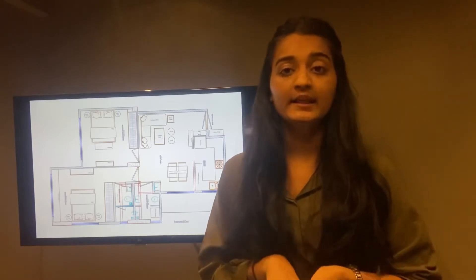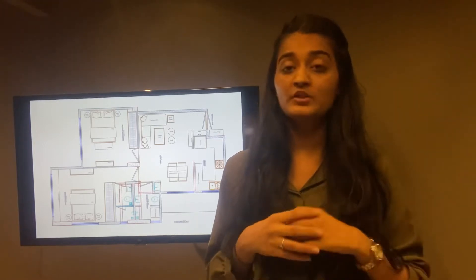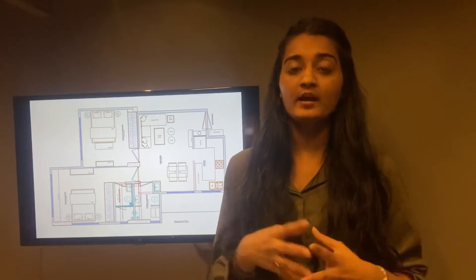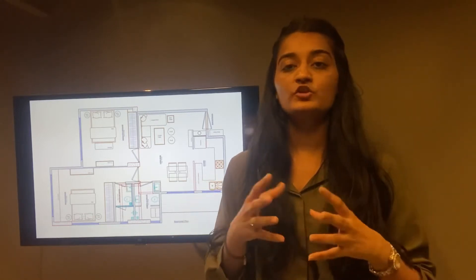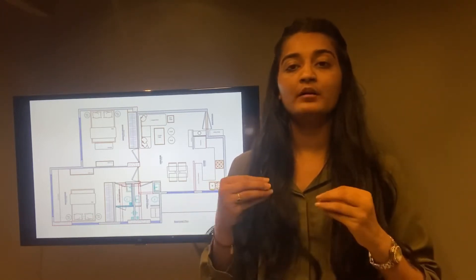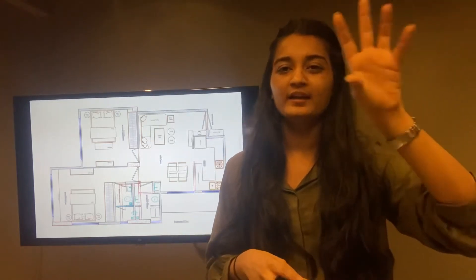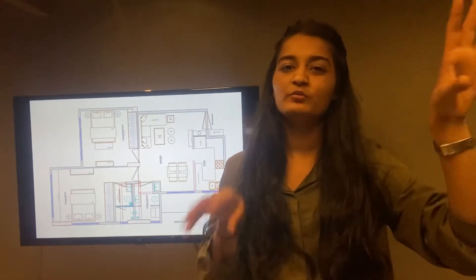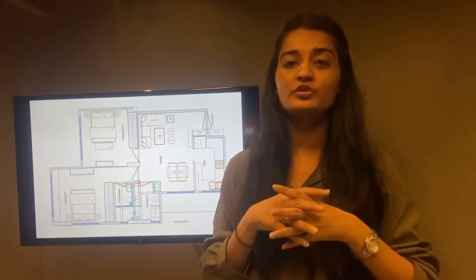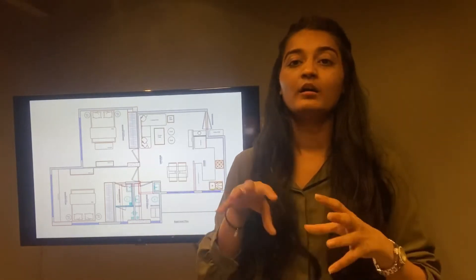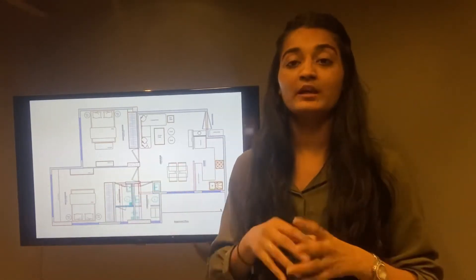The second thing is, if you have requirements from your client, depending on those requirements, make sure that you designate the areas. This area will be the bedroom, you need the bedroom to this side, you need a kitchen here, you need a living room, and you need an entrance to this side. You need a passage, so plan accordingly.